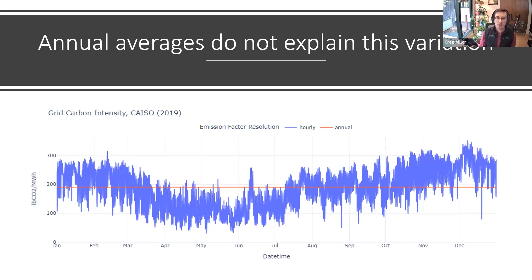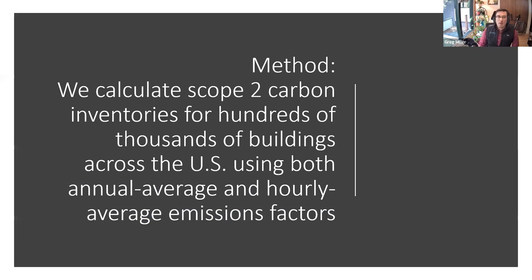The main question we're trying to answer: if we're using carbon intensity data that doesn't represent the actual carbon intensity of the grid at any given moment, how much is this potentially biasing our measurements of scope 2 carbon emissions? How wrong might we be getting these carbon inventories? Our method was to calculate scope 2 carbon inventories for hundreds of thousands of simulated buildings across the United States using both annual average and hourly average emissions factors, and calculate how different the results were.